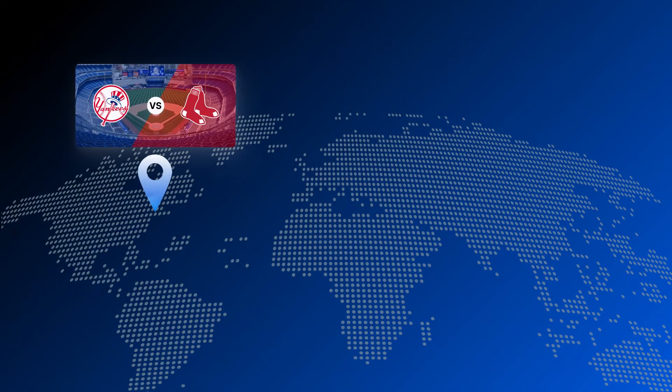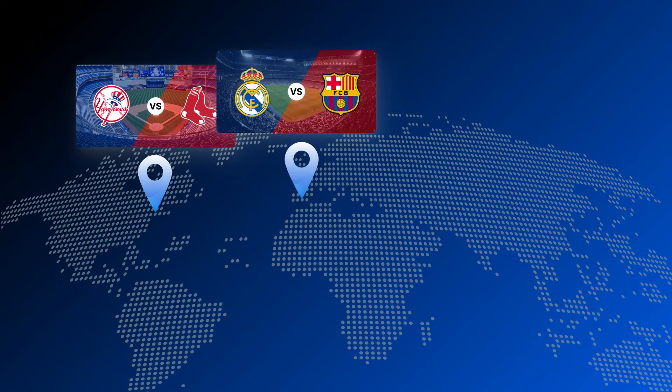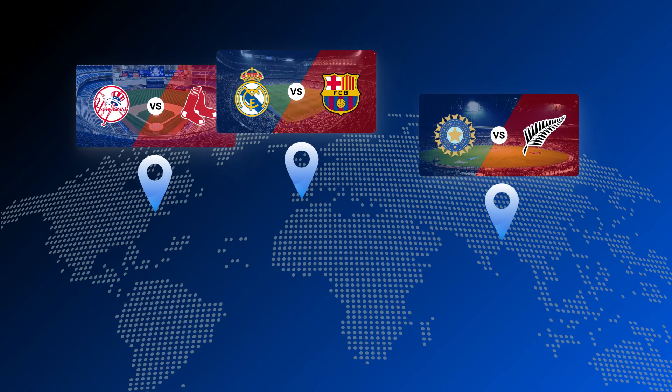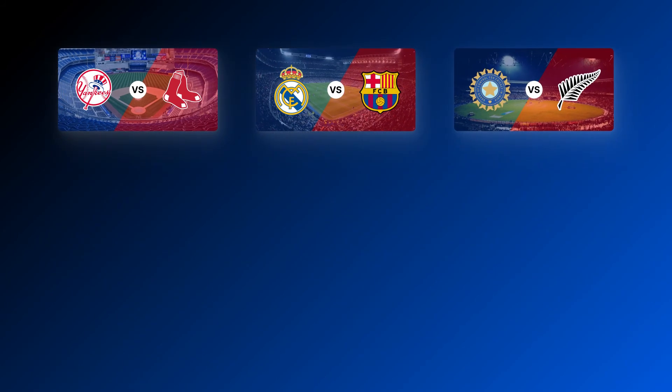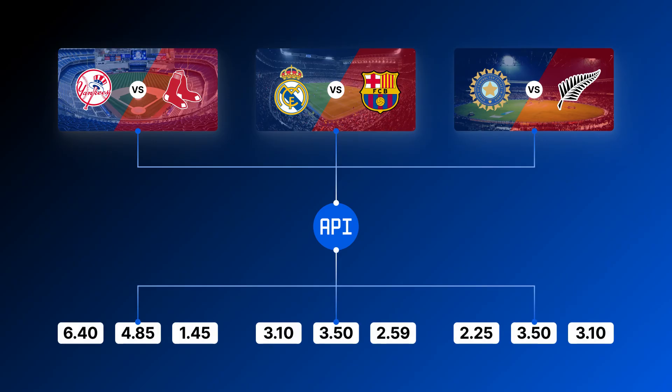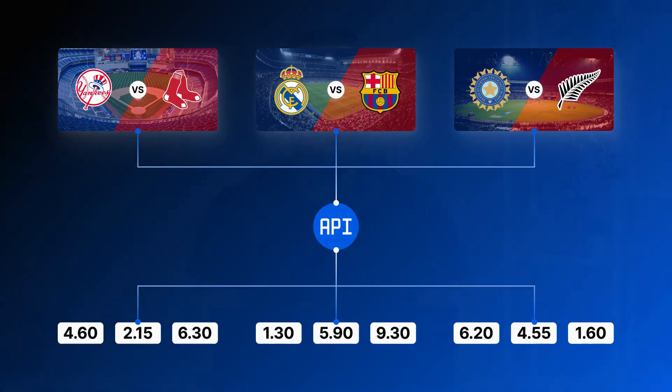For example, in sporting campaigns, you can display ads in the city where the team is based. Also, by linking the ads to an API, you can display betting odds as they're being updated in real time.